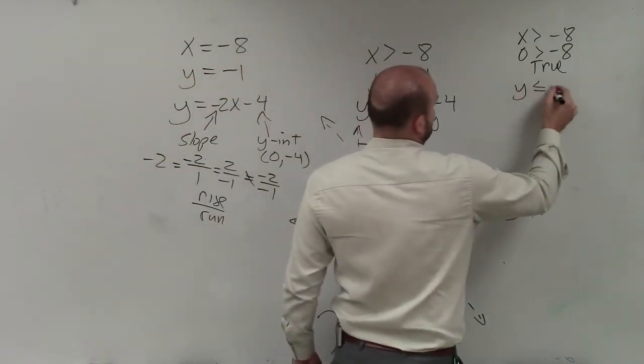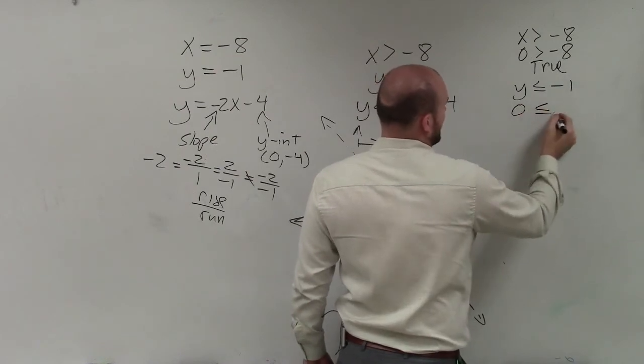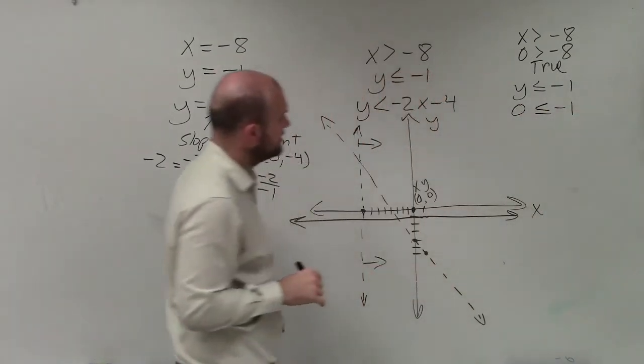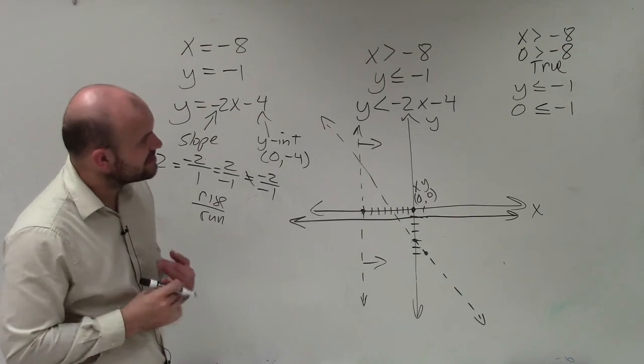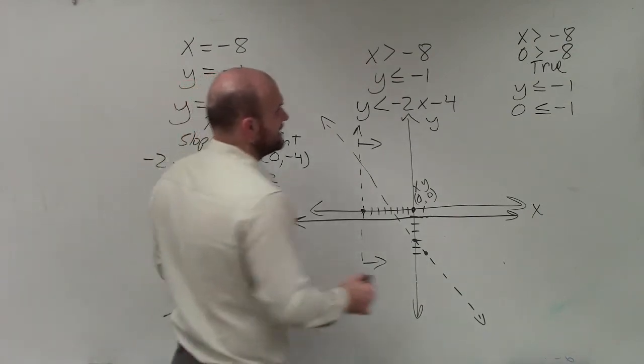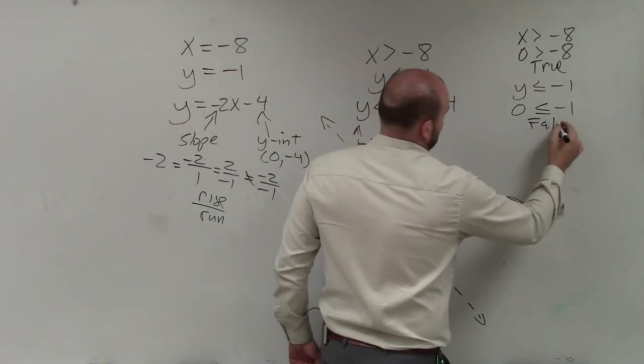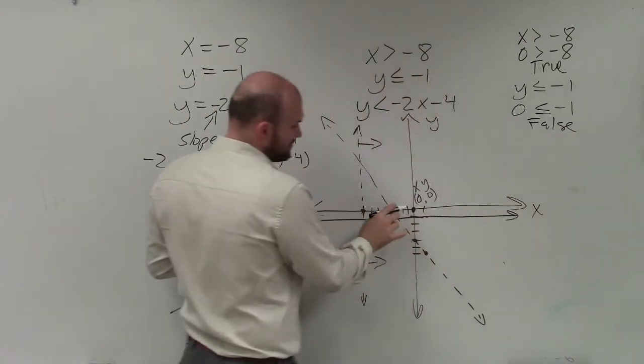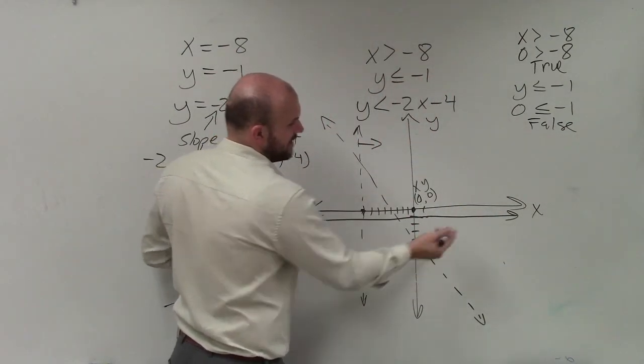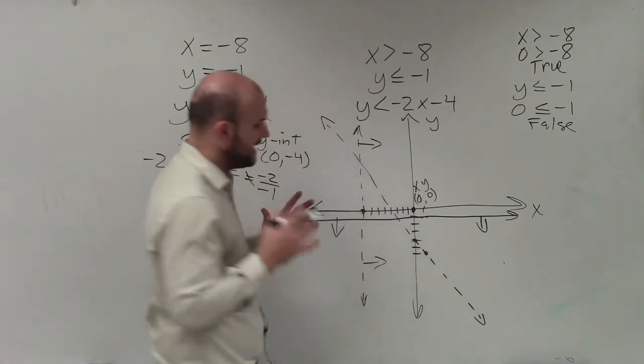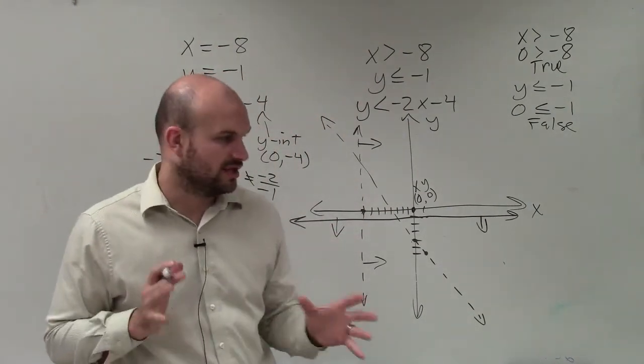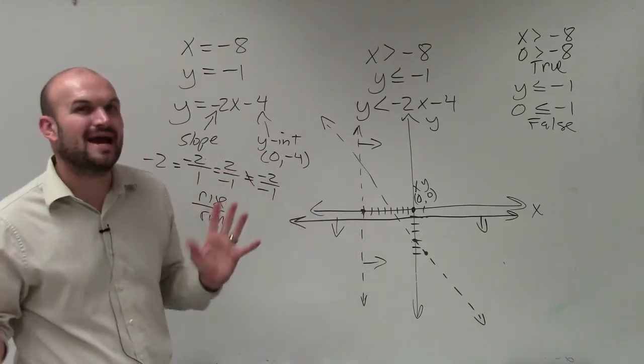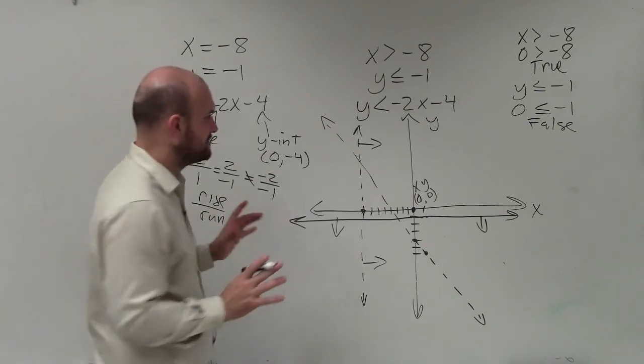Then I do y is less than or equal to negative 1. Plug 0 in for y because I don't have a way to plug for x. And that says 0 is less than or equal to negative 1. That is false. So since my test point is false for here, I'm going to shade away from it or on the opposite side. And I'm just going to do kind of arrows just until I get to the shade because sometimes it gets a little too hectic when I'm doing all these lines of shading.